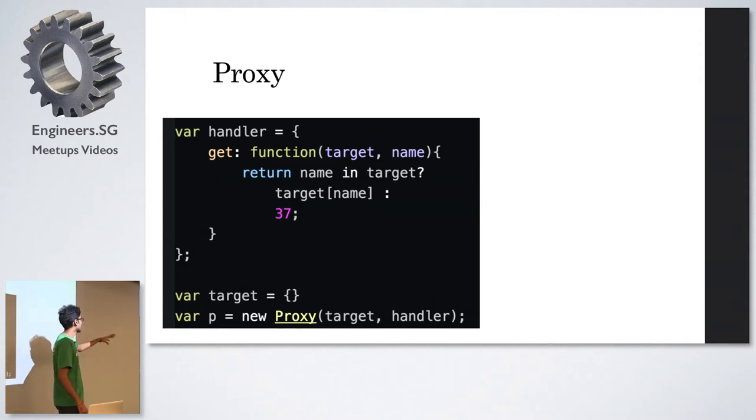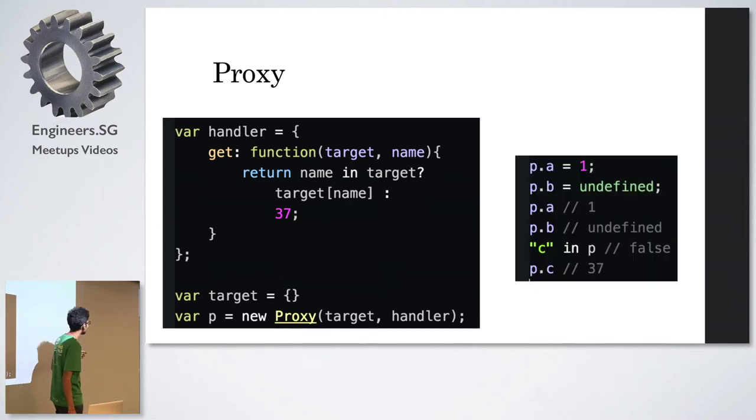This handler is an object which can have multiple properties. Suppose you have the get property, these properties are called traps. These traps means that you want to trap some specific operation on your object. So if you implement the get property of it, it means that I want to trap all accesses to the object. In this case, for example, I'm saying if someone is trying to access some property of me, call my function. That's what the get function is saying. Basically I'm checking if the property that you're trying to access is already there in the object. If it is there, return it or just return 37 because why not?